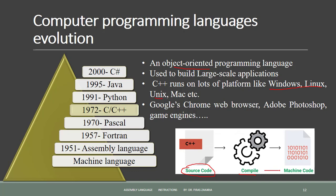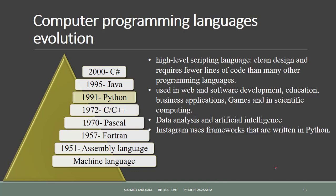Python is a high-level scripting language and is among the top most popular programming languages in the world. Python is often used for its simplicity — it requires fewer lines of code than many other programming languages. It is used in a wide variety of applications including web and software development, education, business applications, gaming, scientific computing, data analysis, and artificial intelligence.